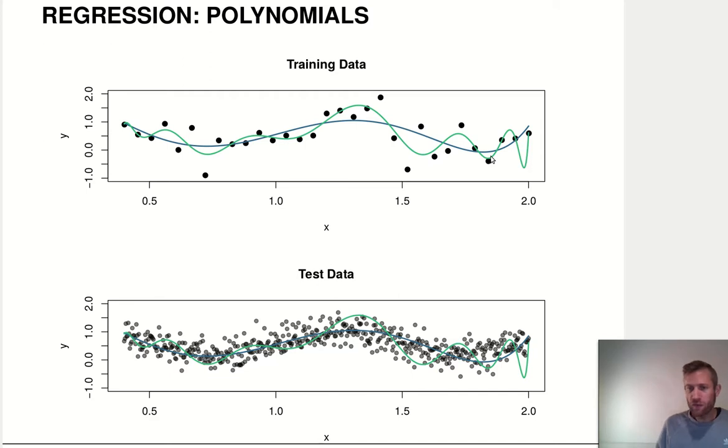Now we generate a bunch of new data from the same distribution and then we can look at how these models fit to the test data. Now you can see that actually the simpler model does much better in terms of how it generalizes to the test data than that more wiggly model, which is just very far off the center of that data cloud here and does completely crazy things, for example here and here. Because it has picked up all the little random wiggles that are in the original data.